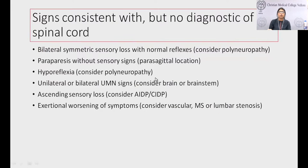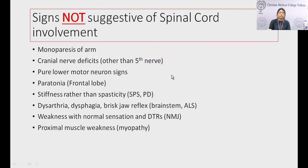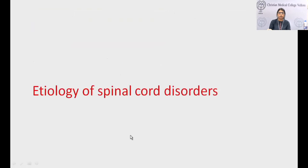Signs consistent with but not diagnostic of spinal cord involvement: symmetrical sensory loss with normal reflexes, ascending sensory loss, hyporeflexia, and exertional worsening. Signs not suggestive of spinal cord: cranial nerve deficits apart from the fifth nerve, paratonia, pure UMN stiffness rather than spasticity (as in stiff person syndrome or Parkinson's), brainstem involvement with UMN and LMN features suggesting ALS, weakness with normal sensation and normal DTRs suggesting neuromuscular junction defects, and proximal muscle weakness suggesting myopathy.